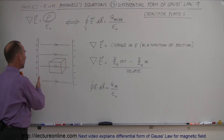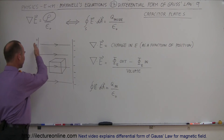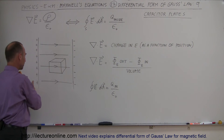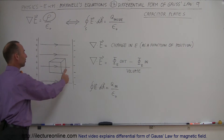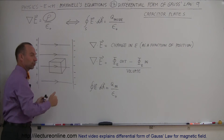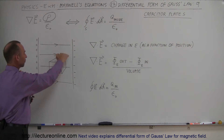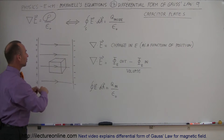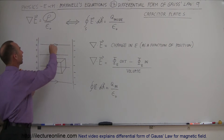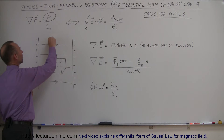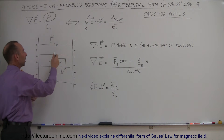So let's say we have a capacitor. We have positive charge on one side, negative charge on the other side, so we know that there's an electric field that exists between the plates — from left to right.